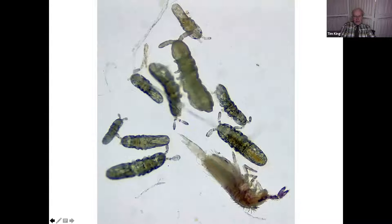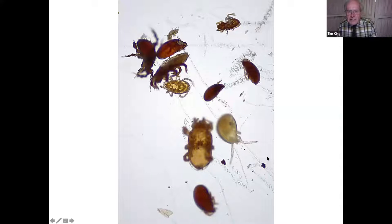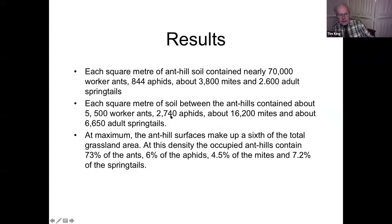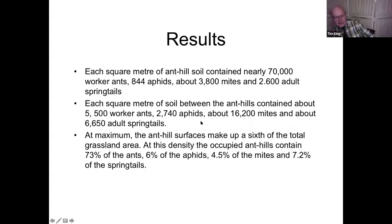There are lots of other organisms too — lots of springtails and a lovely diversity of mites: 35 different species of mites found in that grassland. In results: each square metre of soil between the anthills contained worker ants, approximately 2,740 aphids, about 16,200 mites, and about 6,650 adult springtails — quite apart from earthworms, though earthworms aren't so prevalent in acidic soils. The mites and springtails are largely decomposing organic matter, aphids are largely feeding on plant roots, and ants are feeding on the aphids.